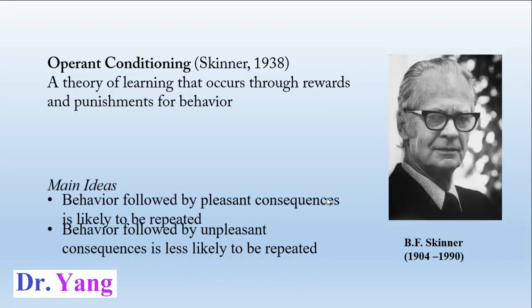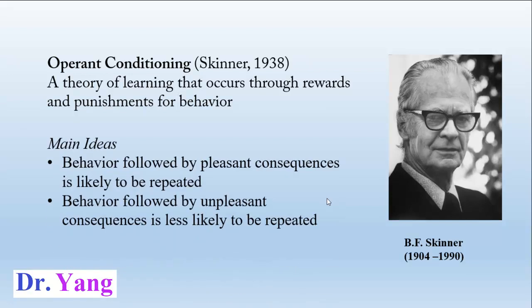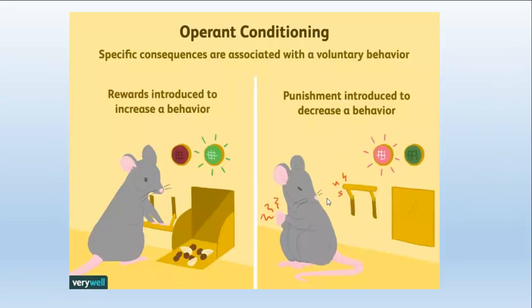The main idea is that there are two different kinds of behavior: behavior followed by pleasant consequences, and behavior followed by unpleasant consequences. Behavior followed by pleasant consequences, such as a reward, is more likely to be repeated. However, behavior followed by unpleasant consequences, such as punishment, is less likely to be repeated. For example, consider an experiment with two buttons — one red and one green — set up for a mouse.